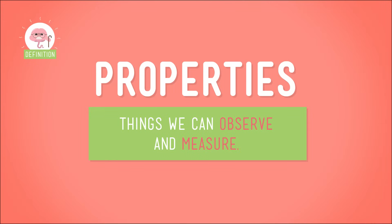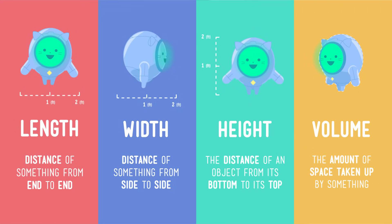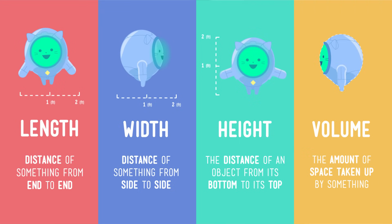No matter what that thing is, I can tell you that it's made up of matter, and all matter has properties — specific characteristics that separate it from other kinds of matter. If you remember from the last episode, properties are things we can observe and measure, things like an object's length, width, height, and volume. But how can we use these kinds of properties to identify an object? I am so glad you asked, because we're going to do a little investigation together.